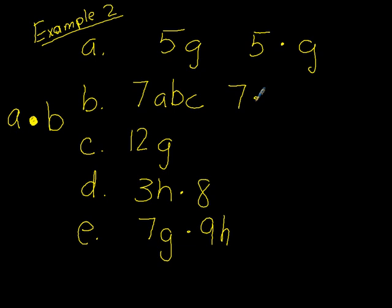So the letter A, 5G would be written as 5 dot G. 7ABC is 7 dot A dot B dot C. 12G is 12 dot G. And go ahead, pause the video, and see if you can expand both D and E. They've been partially expanded for you, but see if you can expand them all the way and come back when you're ready.